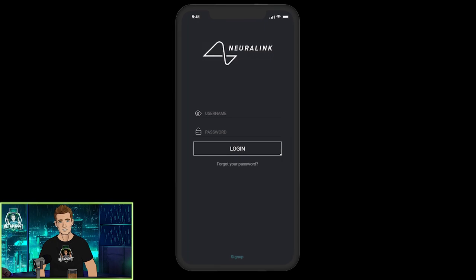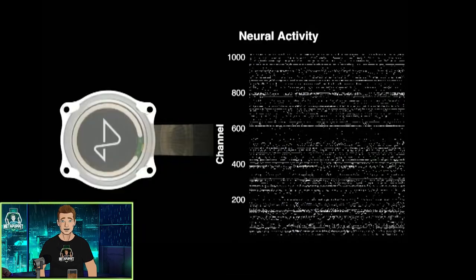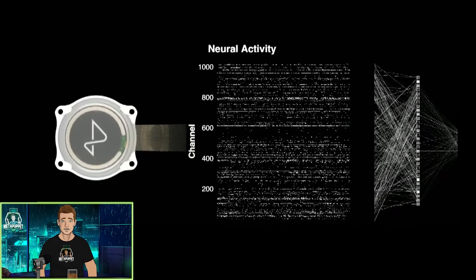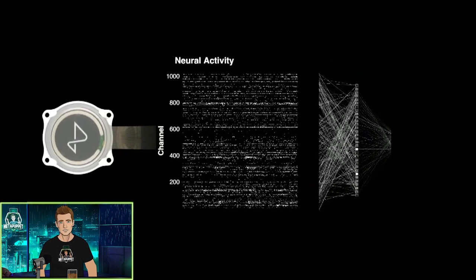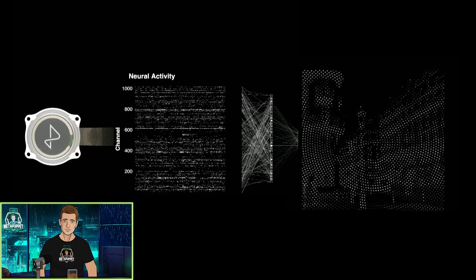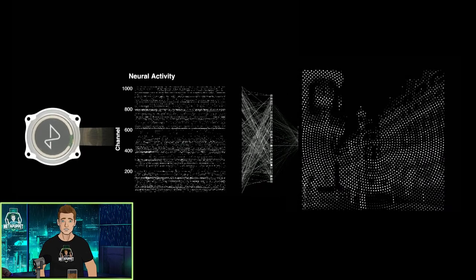The camera image would be processed by an app on their cell phone, which would then stream the data to the N1 implant in their brain. The N1 would convert that image into a pattern of stimulation to the electrodes in the visual cortex, thereby producing a pattern of phosphines that the blind person would see.